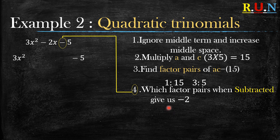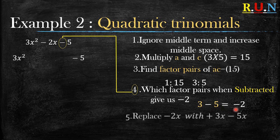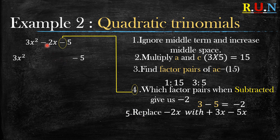Looking at 1 and 15 — they are very far from negative 2, so we skip that pair. What is 5 minus 3? It gives us positive 2, but we need negative 2. So 3 minus 5 gives us negative 2. The factor pairs that give negative 2 when subtracted are positive 3 and negative 5.